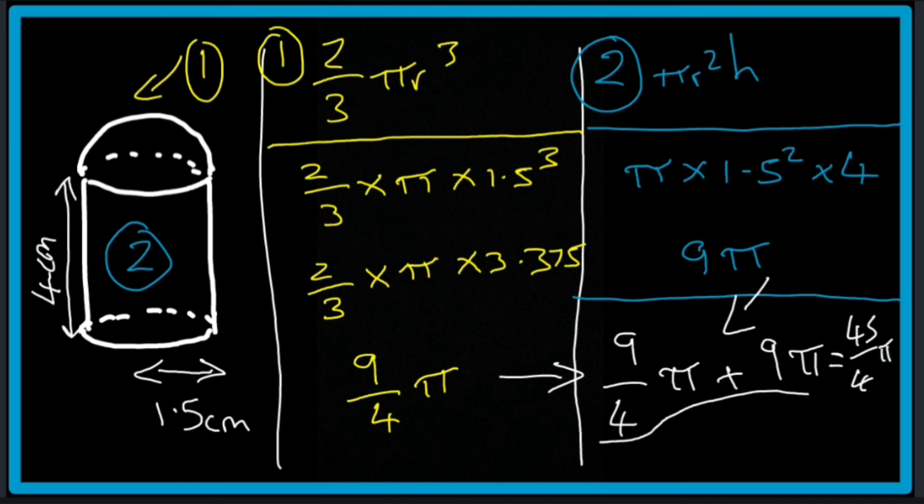Now because it says that it wants the answer to 3 significant figures we convert that to a decimal and we get 35.3 centimeters cubed.